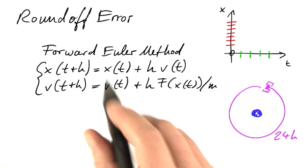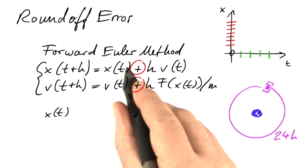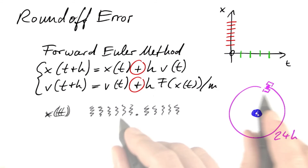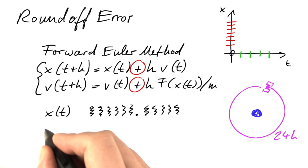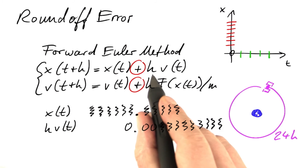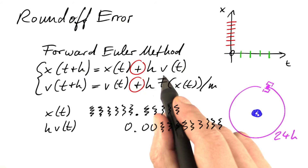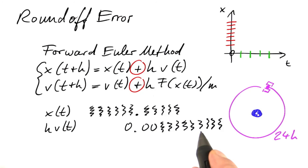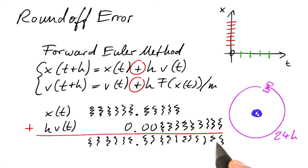What's critical about the forward Euler method in terms of round-off error is this addition. x(t) is a number of reasonable size — in this case, quite a number of meters. But the step size times the velocity is pretty small in comparison, because we're multiplying by that small step size. We then form the sum of these two numbers and get something that looks like this.